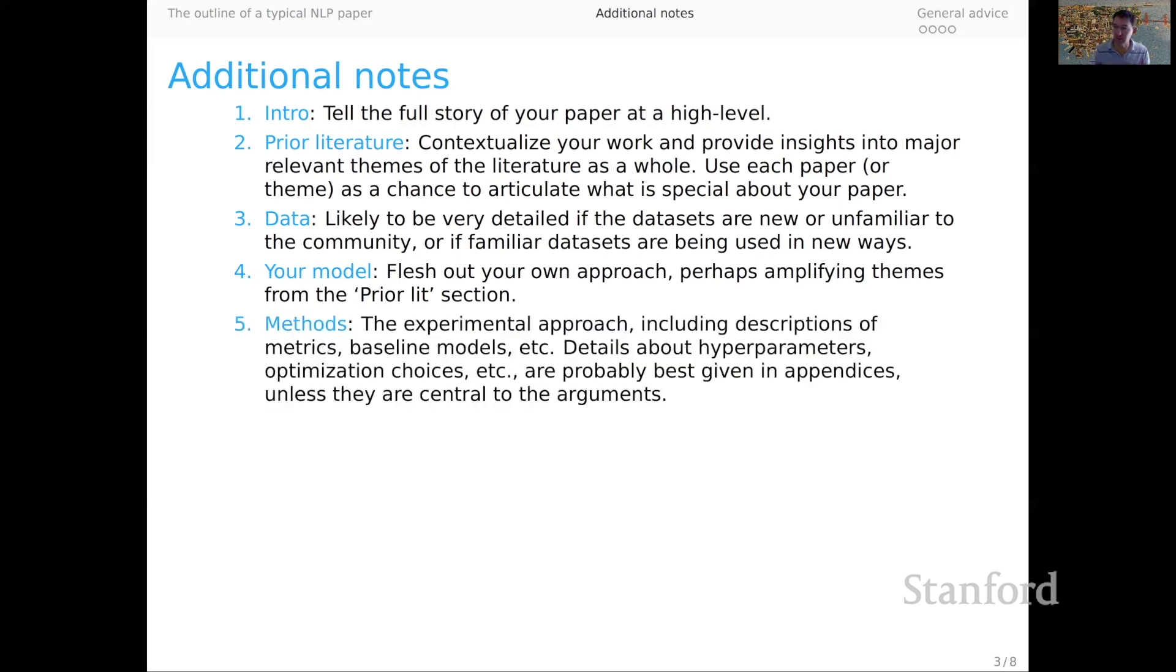Then we turn to supporting your ideas with experimental evidence. You'll report the methods, your experimental approach, including descriptions of the metrics. That will be long or short depending on whether the metrics are familiar or unfamiliar. You want to describe your baseline models and anything else relevant to understanding precisely what's going to happen in your experiments. For details about hyperparameters and optimization choices, you can probably move those to an appendix unless they're really central to the argument. What you want to offer here are the crucial pieces that will help the reader understand precisely what you did for your experiments.